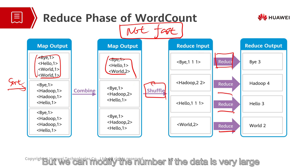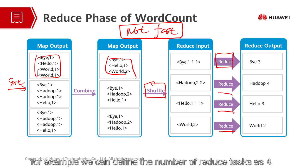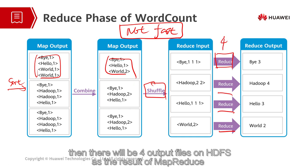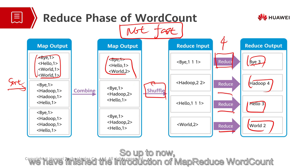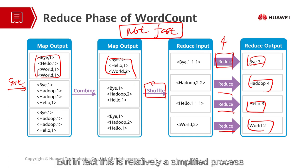But we can modify the number of reduce tasks if the data is very large. For example, we can define the number of reduce tasks as 4, then there will be 4 outputs in HDFS as the result of this application. So up to now, we have finished the introduction of MapReduce WordCount. But in fact, this is a relatively simplified process, and if you are interested, there are more details to be looked up in your leisure time.